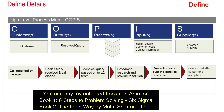The process starts when the call is received by the agent. If it is a basic query, it is resolved and the call is closed. If it is a technical query, it is passed on to the L2 team. The L2 team then researches and provides a resolution, which is sent over email to the customer. Once customer acceptance comes, the case is closed. The output of this process is the query result, and the customer is the one who sent the query.